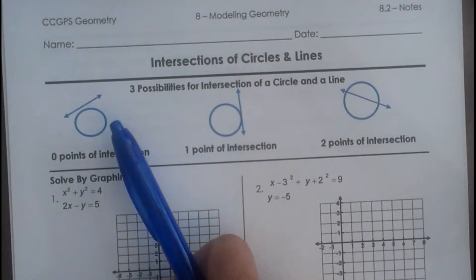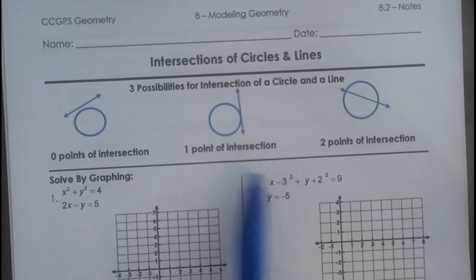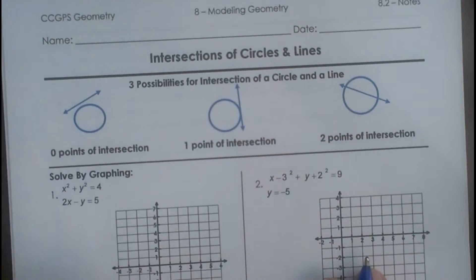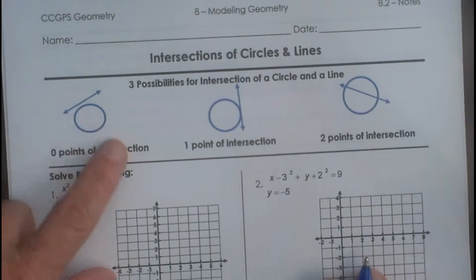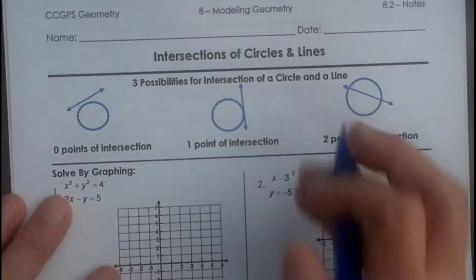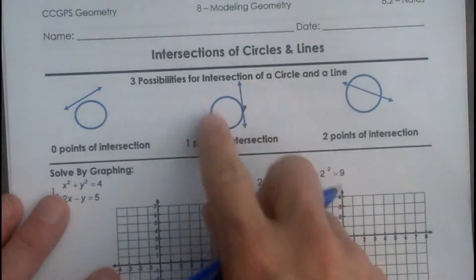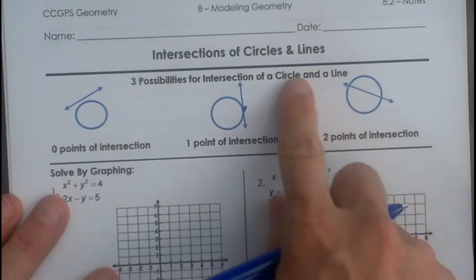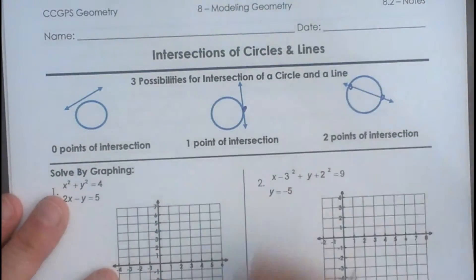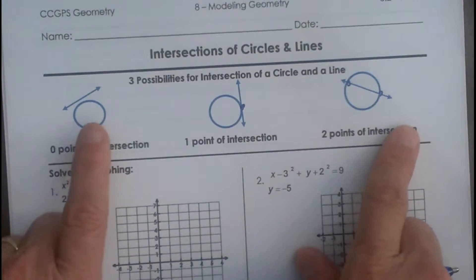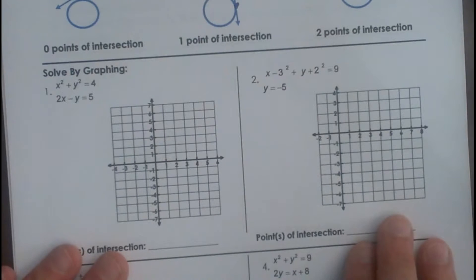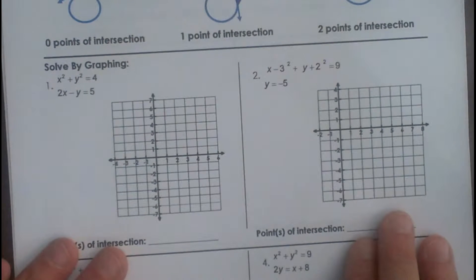Over here on the left we have a picture of a circle and a line. How many intersection points do they have? They have zero — they don't touch at all. A circle and a line may not ever touch, but they can touch in one place, which we call a point of tangency, as you learned in your circle units. A circle and a line can also have two points of intersection when a secant goes through. So we have three choices: they don't touch, they touch once, or they touch twice.